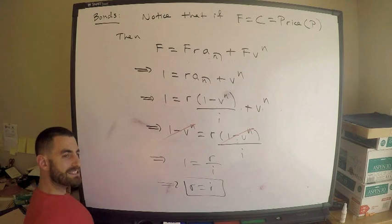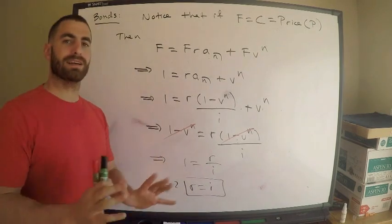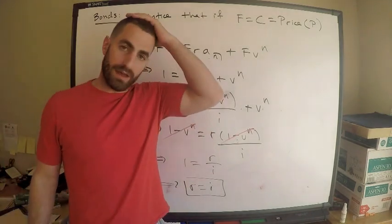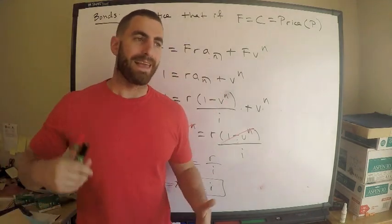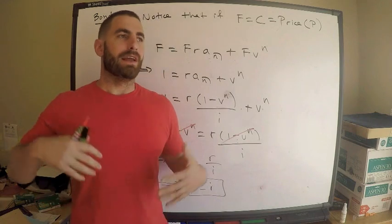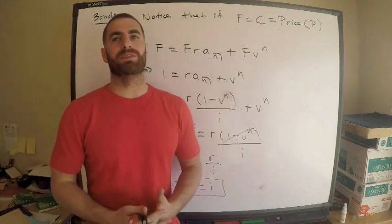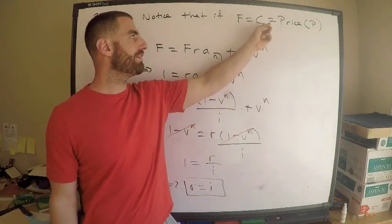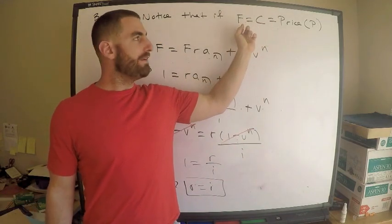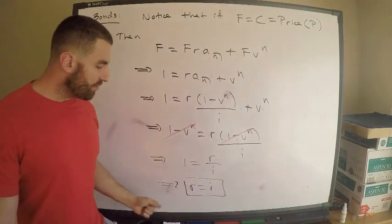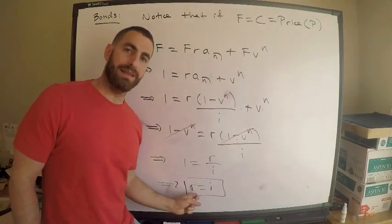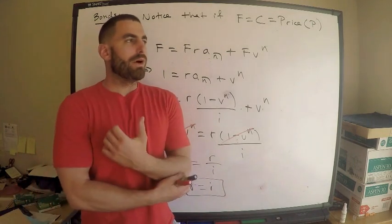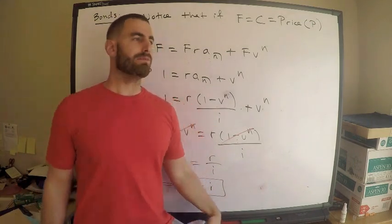This is a useful fact. If a bond is purchased at face value — and if they don't say what it's redeemed at, it's automatically redeemed at face value — then you know the coupon rate equals the yield rate. Let me give you an example of why that matters.